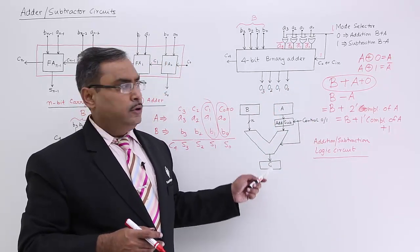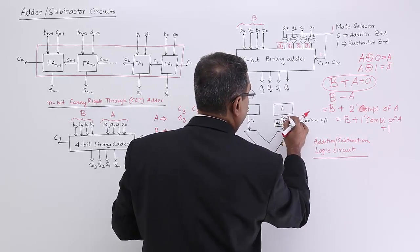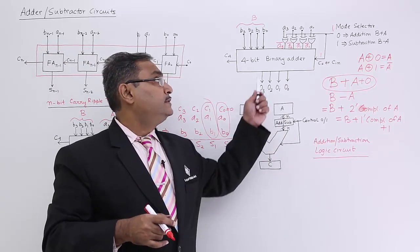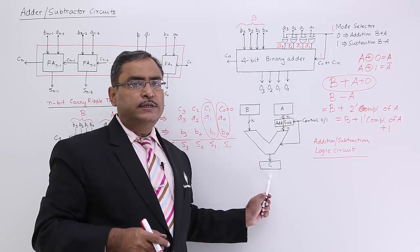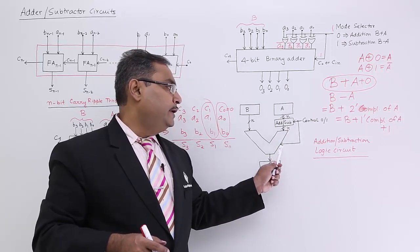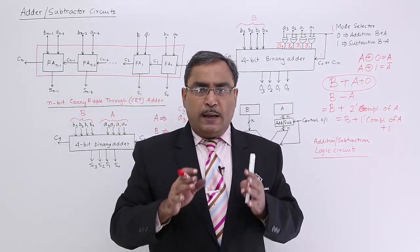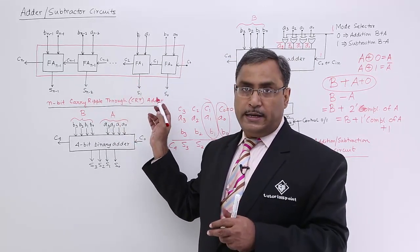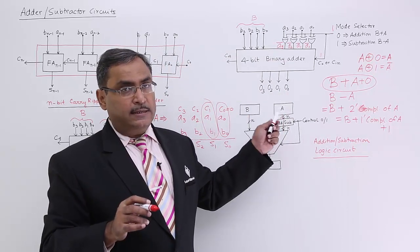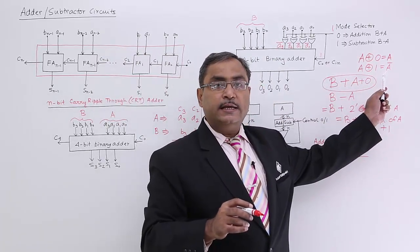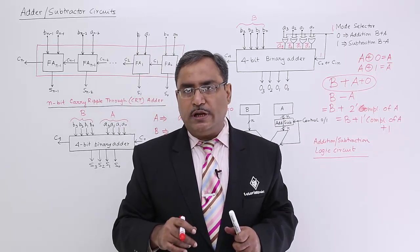That is the schematic diagram I have drawn. B is coming directly. A is coming through the XOR gates. This is the add or subtract decisive logic selected by the mode control using 0 or 1. Then this is the ALU and the output is obtained. The mode control line also feeds into the ALU as the initial input carry. In this session I have covered the carry ripple through adder, its schematic diagram, and how the same circuit can be used for both addition and subtraction using the Boolean identities A XOR 0 equals A and A XOR 1 equals A bar.